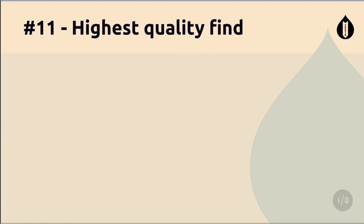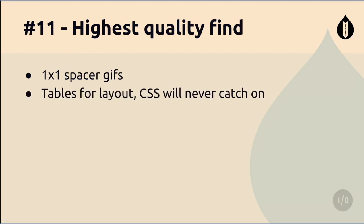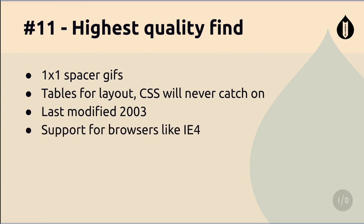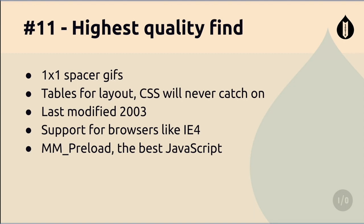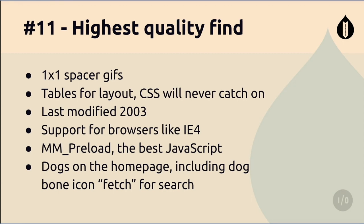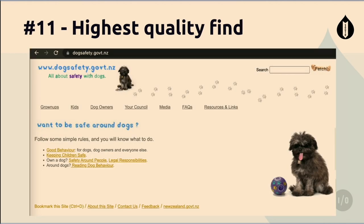The highest quality find: the perfection of 1990s web layout. It uses tables because CSS will never catch on — perfected 20 years ago and never updated. It has support for modern browsers like IE4. It's got a JavaScript mm preload function. It's got dogs on the home page, and instead of a search button it has a button called 'Fetch'. It does have TLS though — think about that for a second. Go visit dogsafety.gov.nz — I'll see a traffic spike and so will they. That dog has a really long tongue.